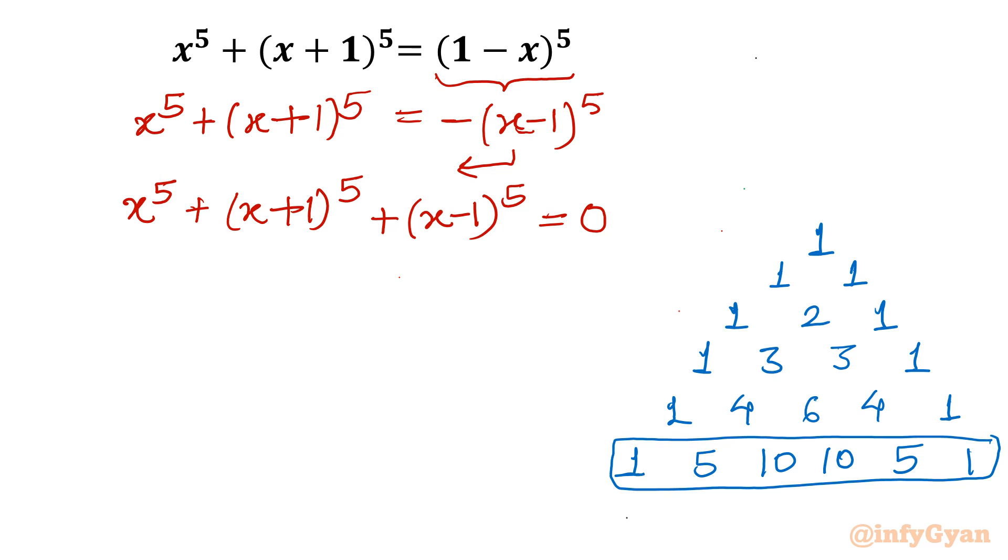See there is one alternate method also. Simply you can consider x plus 1 whole power 5 as x plus 1 times x plus 1 whole power 4. Similarly, x minus 1 whole power 5 as x minus 1 times x minus 1 whole power 4. Now this is x plus 1 whole square whole square. So x plus 1 whole square is x square plus 2x plus 1. Then a plus b plus c whole square formula. So this is another approach using algebraic identity. But once Pascal triangle is available, no need to think about that.